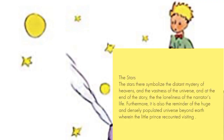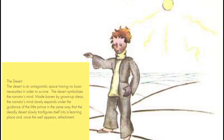The stars symbolize the distant mystery of the heavens and the vastness of the universe, and at the end of the story, the loneliness of the narrator's life. They are also a reminder of the huge and densely populated universe beyond the earth, which the little prince recounted visiting. The desert is an antagonistic space lacking the basic necessities to survive, and it symbolizes the narrator's mind made barren by grown-up ideas.